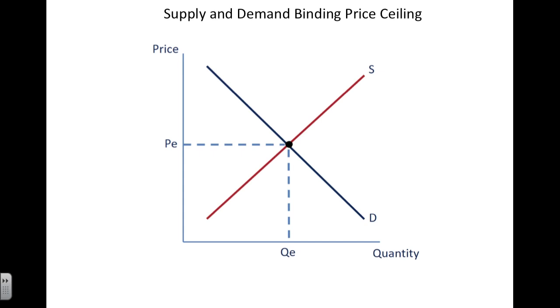One such imbalance is what's known as a price ceiling. A price ceiling is when the government keeps prices artificially low on a product, so the price can go no higher than the set price ceiling.